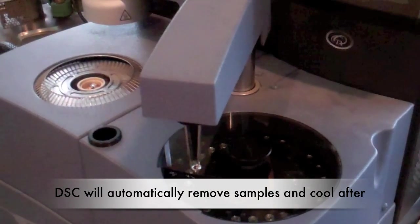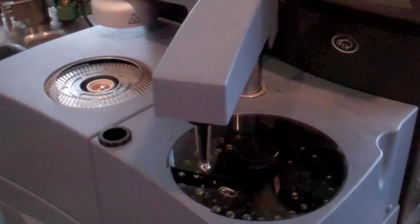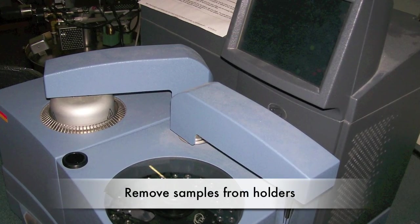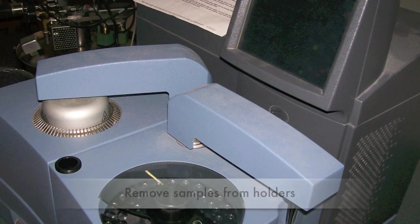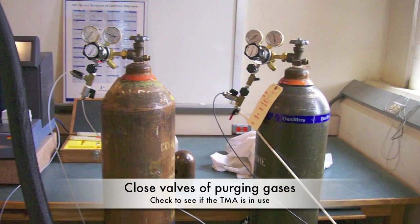The machine will automatically begin cooling and unload the last sample at the end of the runs. After the run is completed, let the DSC cool to room temperature. Remove all samples and close the valves of the purge gases.